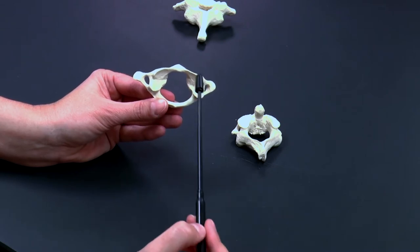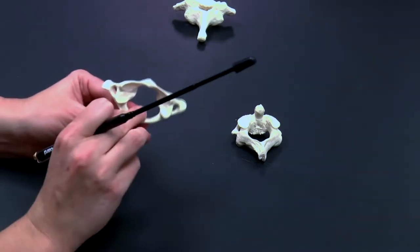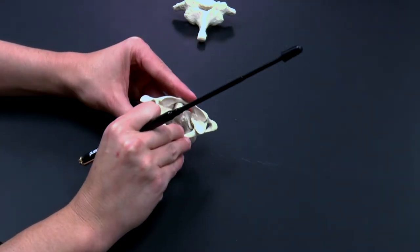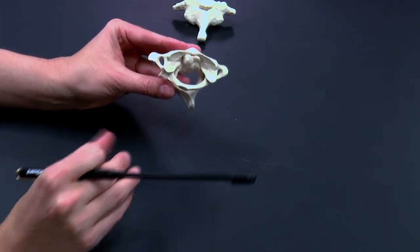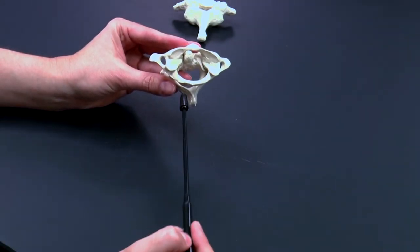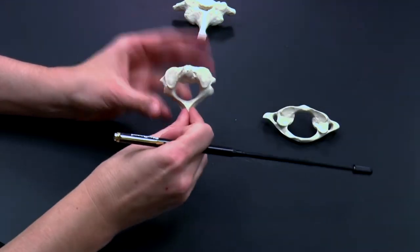So C1, cervical vertebrae 1, and the atlas. And then the atlas articulates with the very next one, C2, like this. And it forms a joint between the atlas and C2, which is called the axis. So let me just look at the axis separately.